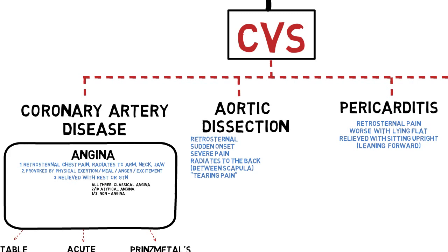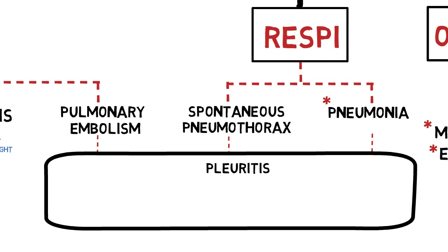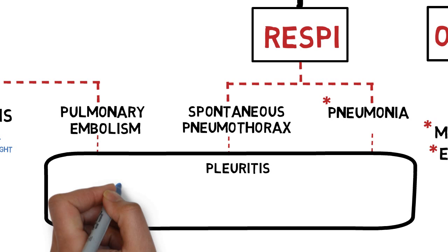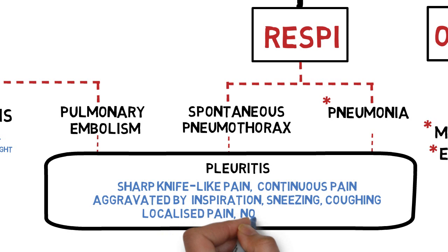In respiratory disorders, they share similar features of pain, commonly described as pleuritic pain, because irritation of the parietal pleura causes this pain. It is described as sharp, knife-like pain that tends to be persistent. The pain is aggravated by deep inspiration, sneezing, or coughing because these further stretch the pleura.